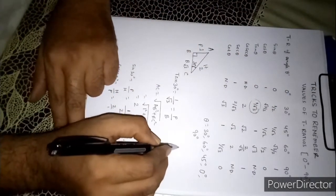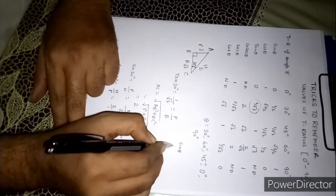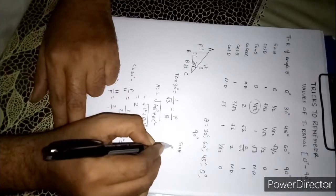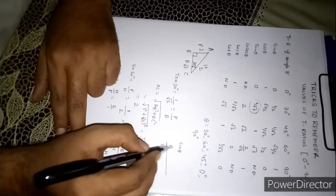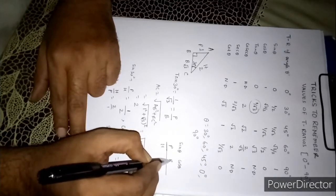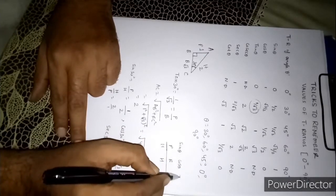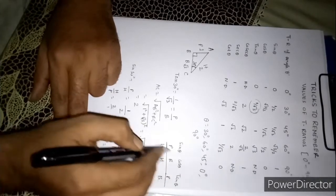Now one more trick. Sin theta is what? You can remember this one: sin theta is P by H, cos theta is B by H, tan theta is P by B.